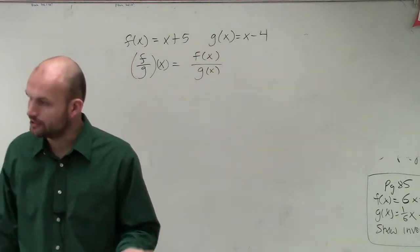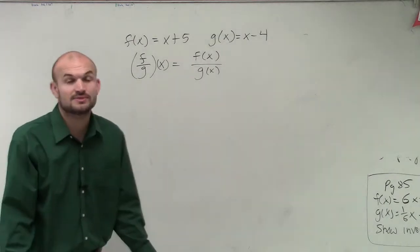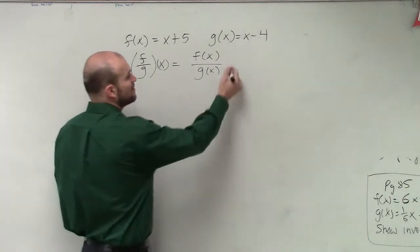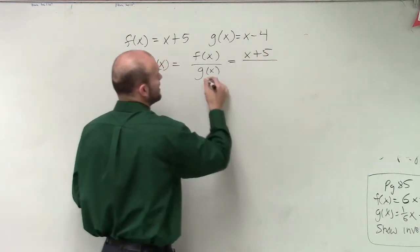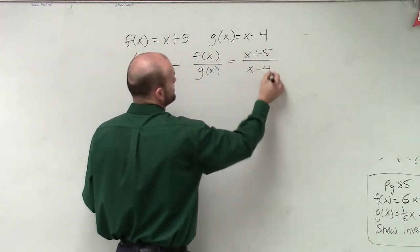Now, we did learn how to divide polynomials, right? So if possible, sometimes you might want to simplify them. But when I have f of x, I have x plus 5 divided by g of x, which is x minus 4.